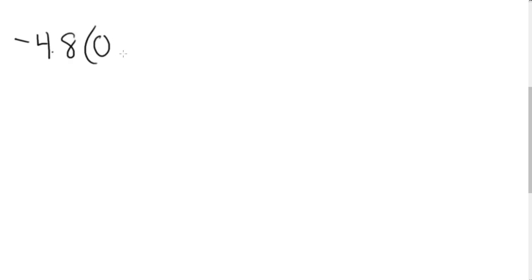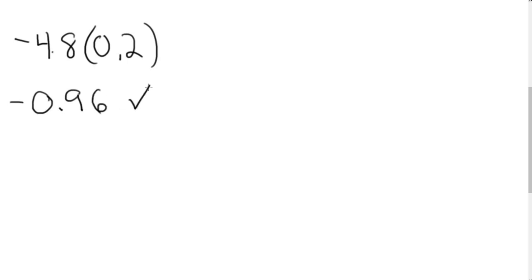Let's look at multiplication with decimals. For example, negative 4.8 times 0.2. My thought process: when I multiply a negative and a positive, I get a negative. And 4.8 times 0.2 gives me 0.96. So the answer is negative 0.96.